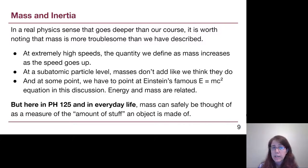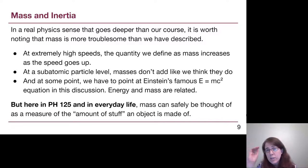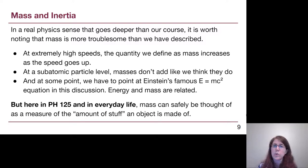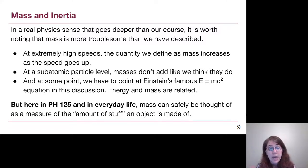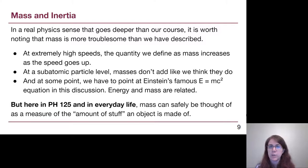When objects are close to the speed of light, the quantity we think of as mass is actually based on how fast it's going. When we get down to the subatomic particle level, simply adding up protons and neutrons doesn't work as simply when we consider quarks. And mass can be converted into energy and vice versa with Einstein's famous E = mc² equation. Here in Physics 125 we don't have to worry about any of these details — they're here just to make sure we recognize there is more to physics than what we're covering in a single semester. For us, mass can just be the amount of stuff.